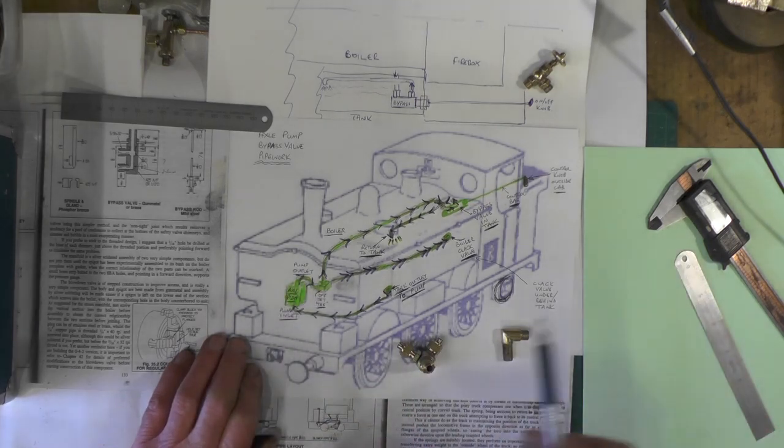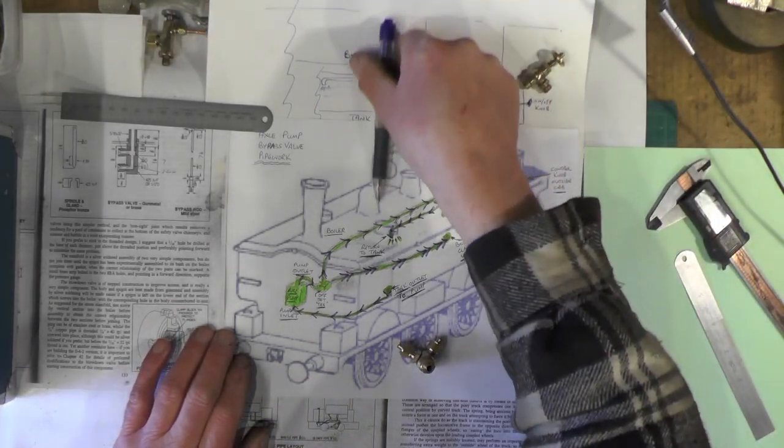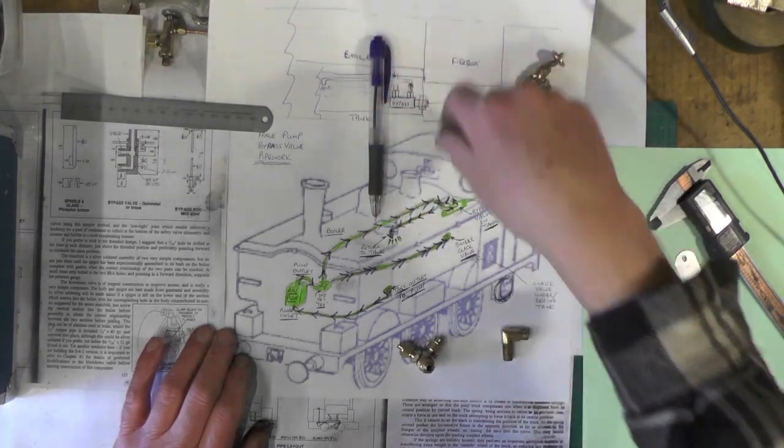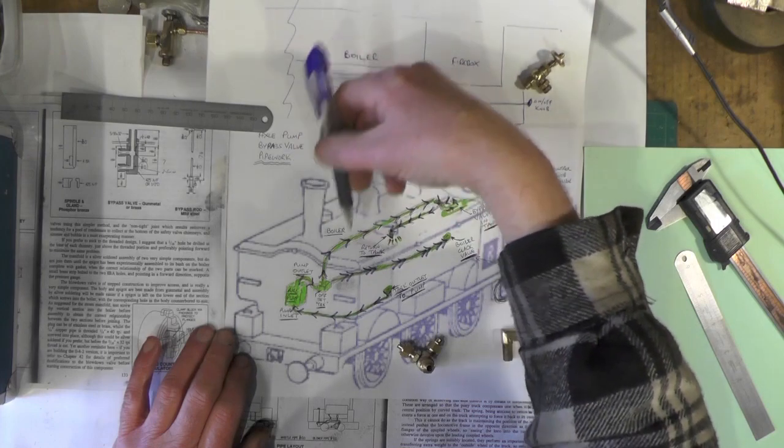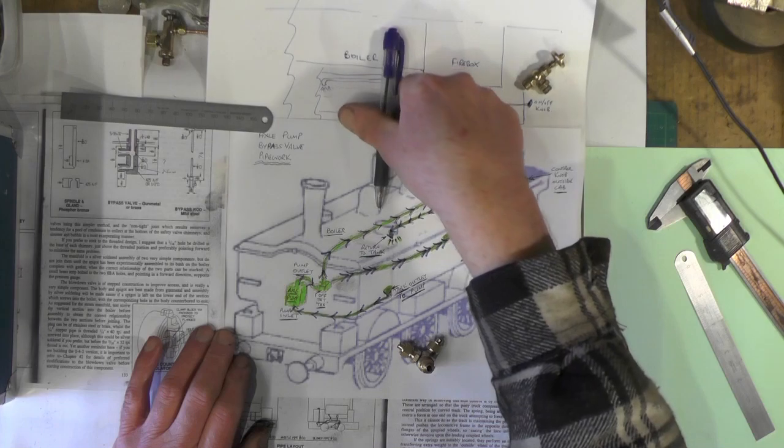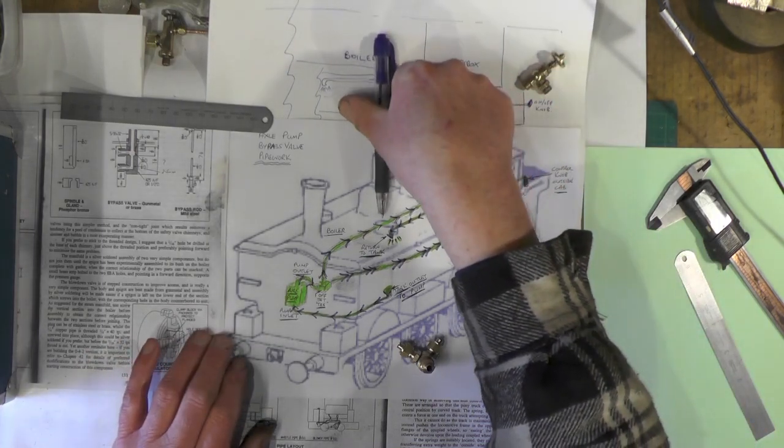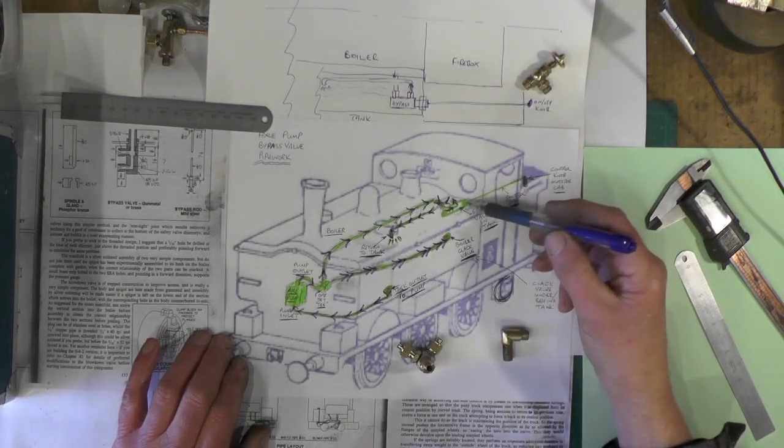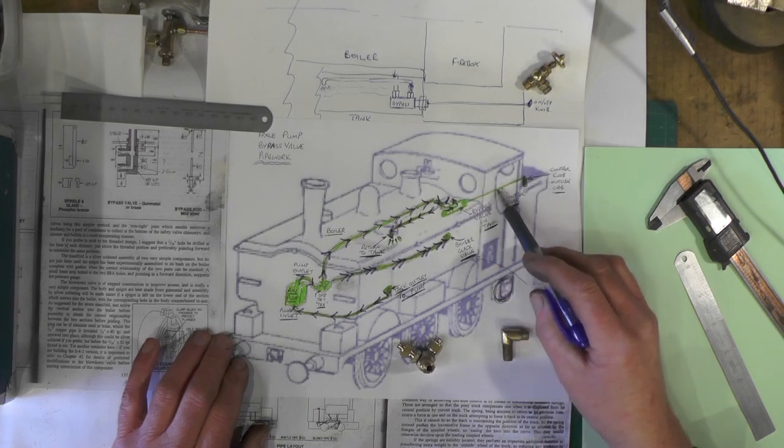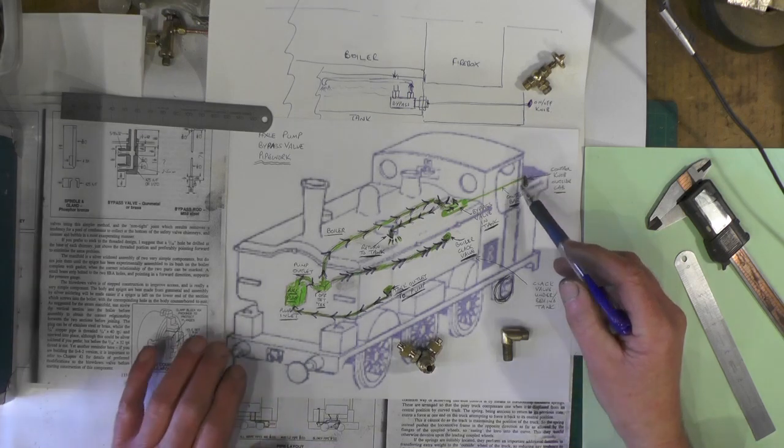So what does it do then this bypass valve? Well normally on the Sweet Pete it's on the other side of the Loco and the valve rod with the handle on is vertical and then the valve sits under the cab floor. That's on a normal Sweet Pete I think. Well I'm going to put mine in the tank and then I'm going to have the valve rod come through the cab with the handle on the outside of the cab so it's easy to get to to work.